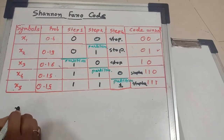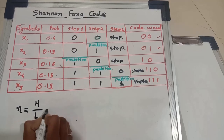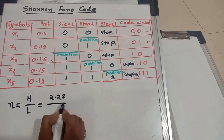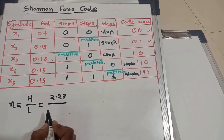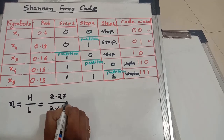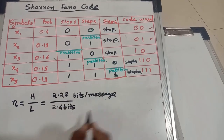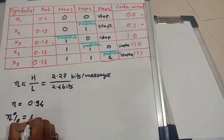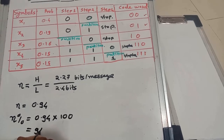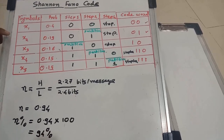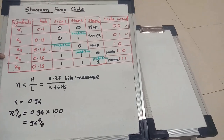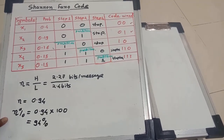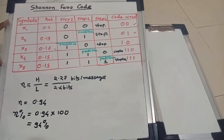The efficiency of this coding technique is H divided by L. We know H = 2.27 bits per message and L = 2.4 bits, so efficiency = 2.27 / 2.4 = 0.94, which is 94%. We can solve the same problem using Huffman code and compare the efficiency to determine which coding technique is better for a particular discrete memoryless source. Thank you.